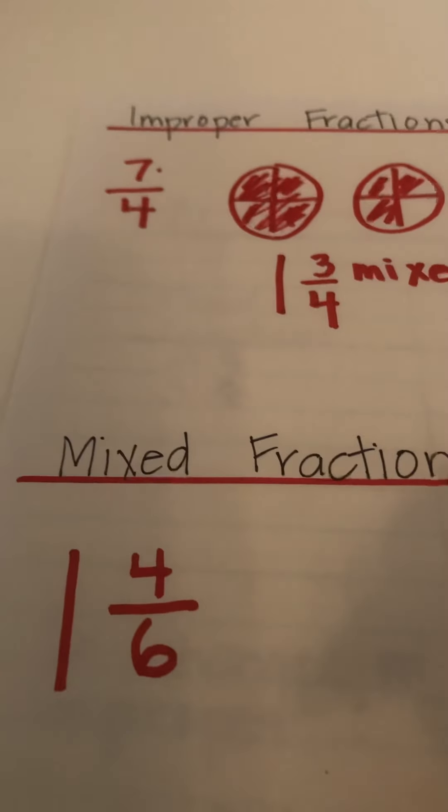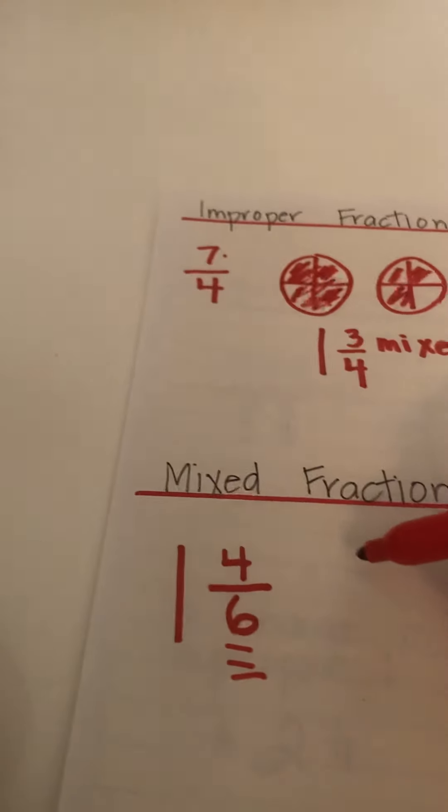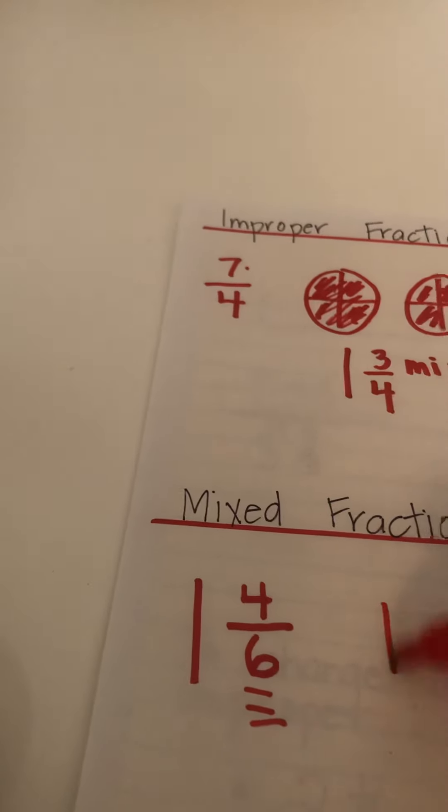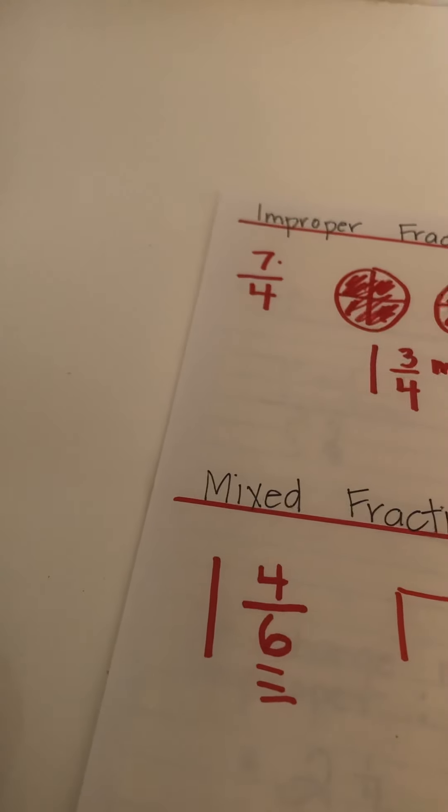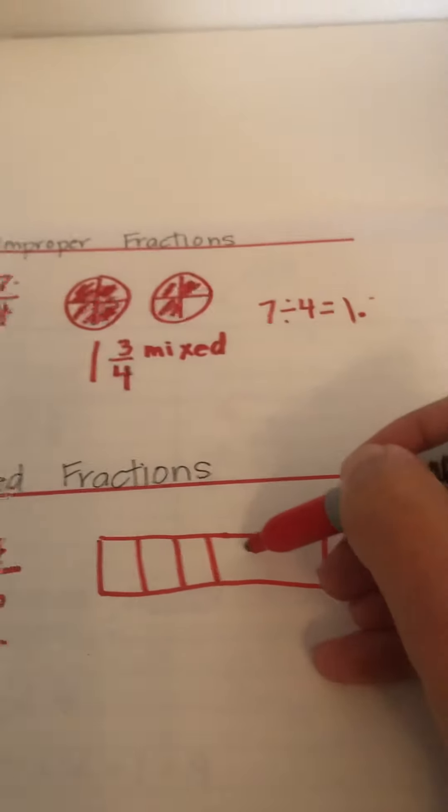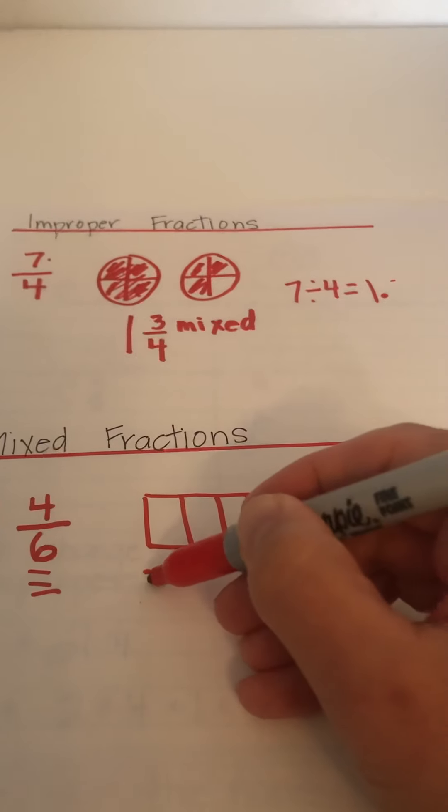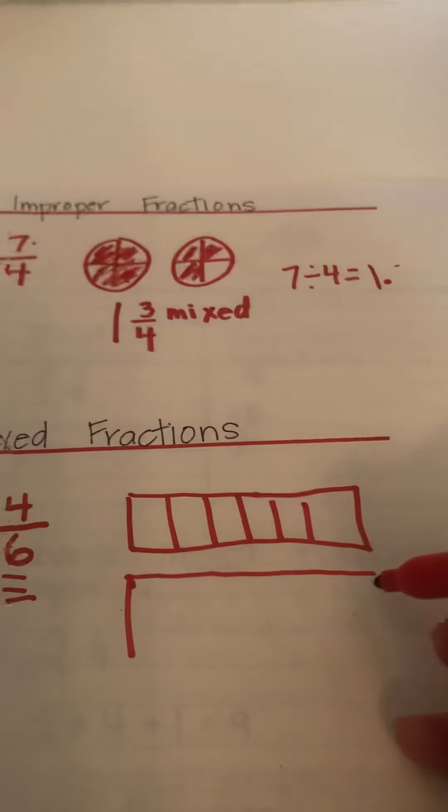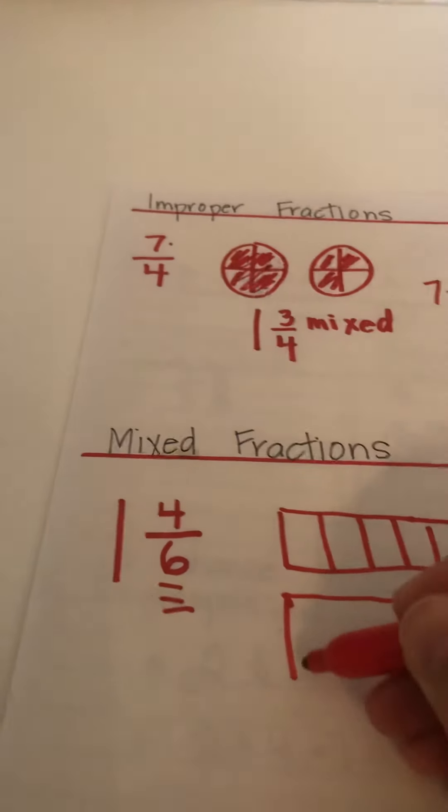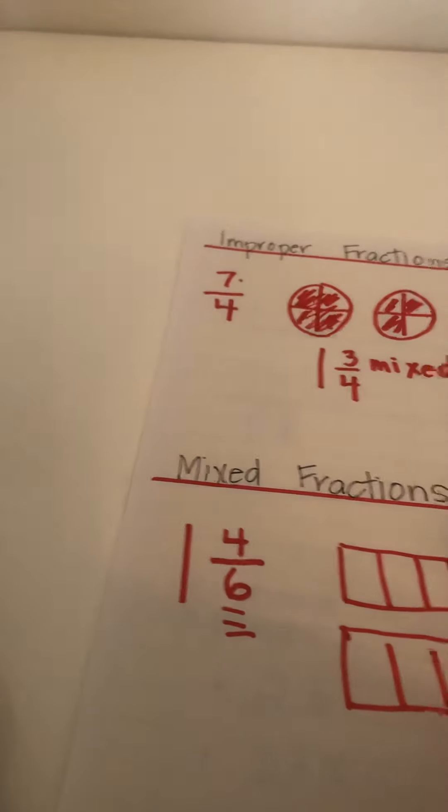Now here's our mixed fraction, one and four-sixths. So our denominator is six, so we need fractions with six. You can do the bars or you could do the circles. Sorry for the shoddy videotaping, I'm doing it by myself today. My daughter is busy doing her schoolwork. Oh, here she is. Maybe she can videotape me now. Come on Paige, help me.